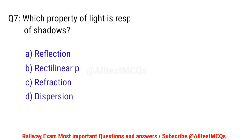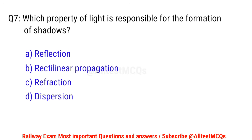Q7. Which property of light is responsible for the formation of shadows? D — right option is B. Rectilinear propagation.